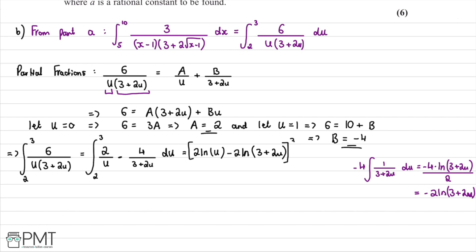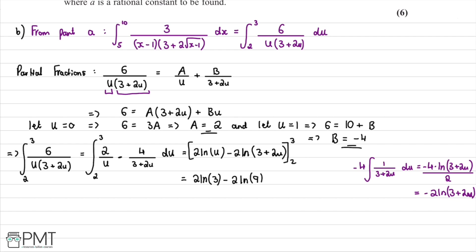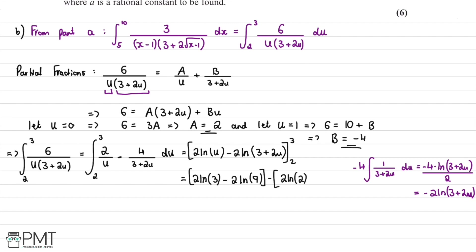Substituting the limits, at u equals 3 we get 2 ln 3 minus 2 ln of 3 plus 6, which is 2 ln 3 minus 2 ln 9. At u equals 2 we get 2 ln 2 minus 2 ln 7. Subtracting the lower limit from the upper limit gives 2 ln 3 minus 2 ln 9 minus 2 ln 2 plus 2 ln 7.